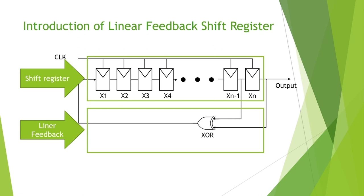For XN and XN-1, there are two bits. These two bits go through an XOR gate, and the XOR gate produces a result as the first bit of the new shift register's inner state. After computation in the XOR gate, the result is returned to the first digit of the shift register.